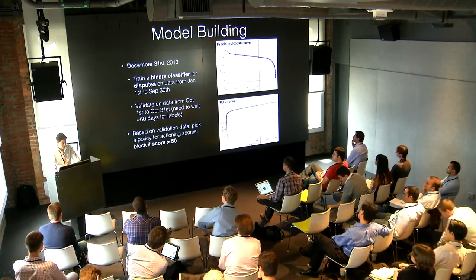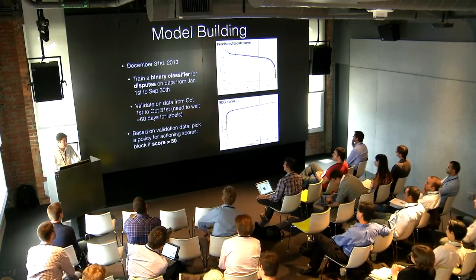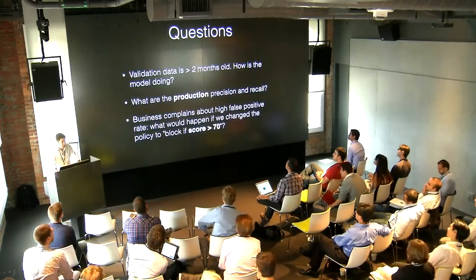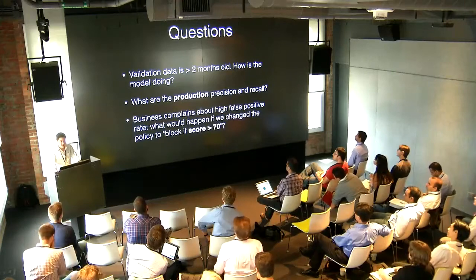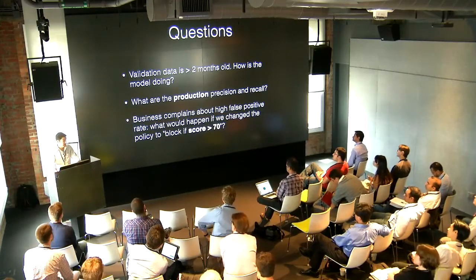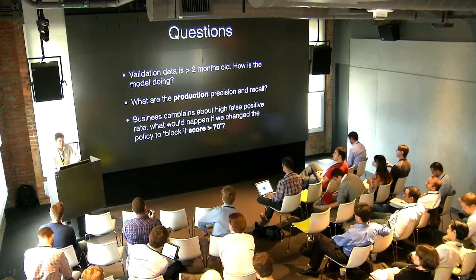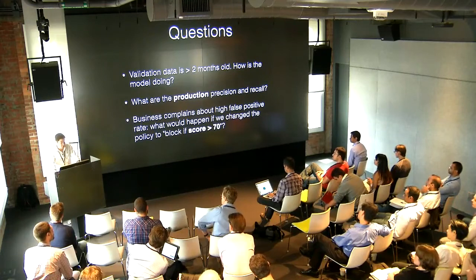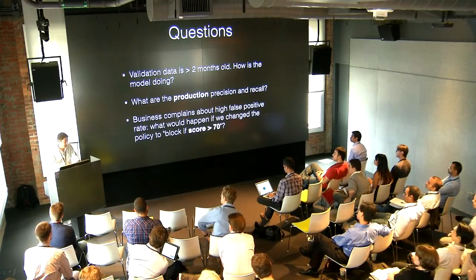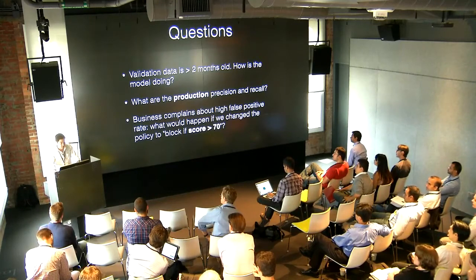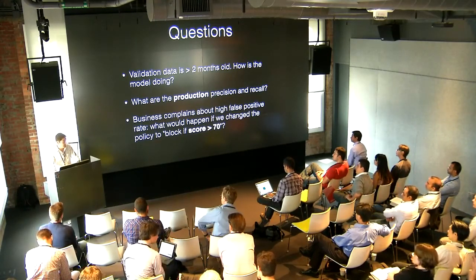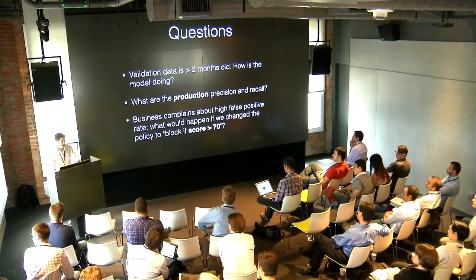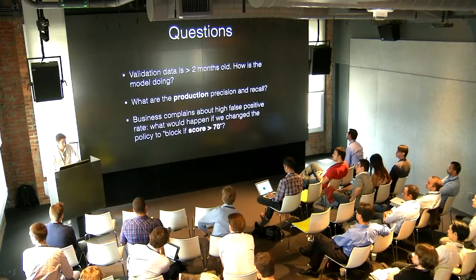January 1st, 2014, we now have a model in production blocking charges. The first question: we trained on data ending September 30th and tested on October data, so our model in production was trained on data that's over two months old. Now my boss asks, 'You've had this model running for all of January — what are the precision and recall?' Not from cross-validation, but of the model as it's running in the real world.